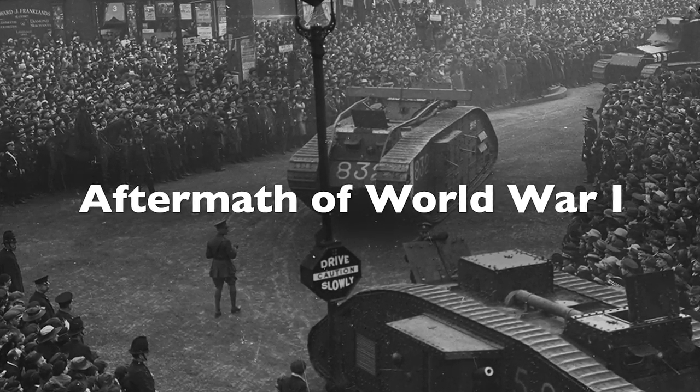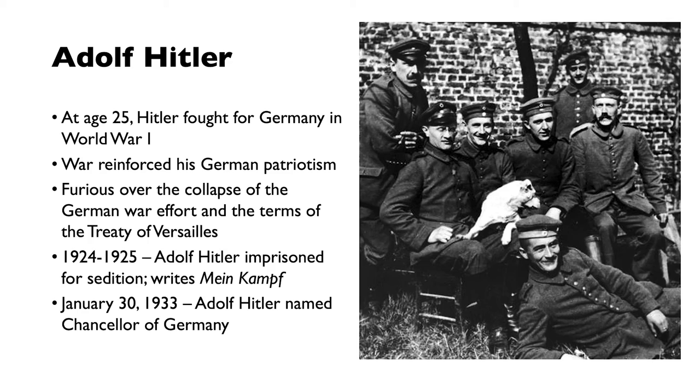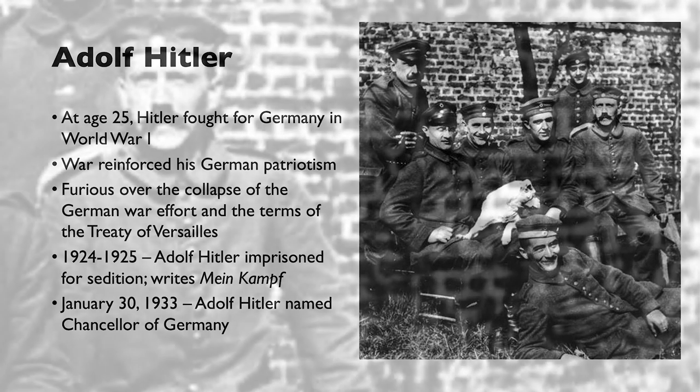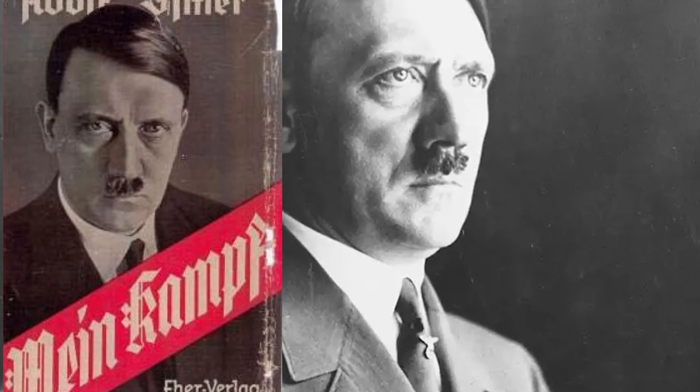The world would change forever after World War I. Adolf Hitler fought for Germany at age 25 and was injured at the Battle of the Somme. He described war as the greatest of all experiences — war reinforced his German patriotism, and he was furious over the collapse of the German war effort and the terms of the Treaty of Versailles. Between 1924 and 1925, Hitler was imprisoned for sedition and wrote Mein Kampf while there. On January 30th, 1933, Adolf Hitler was named Chancellor of Germany — and the rest is history.